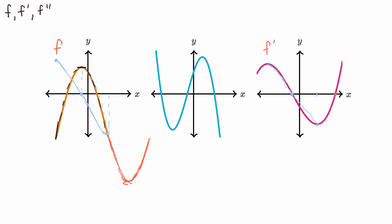Now let's look at the second — the blue — graph. What would its derivative look like? Over here the slope is quite negative, and it becomes less and less negative until the slope is zero, so the derivative would intersect the x-axis there. Then it becomes more and more positive, but right around a certain point it starts getting less positive again — less positive, less positive — until the derivative crosses zero again. Then the slope gets more and more negative, so the derivative gets more and more negative as well.